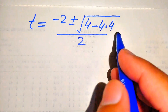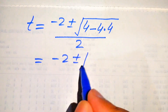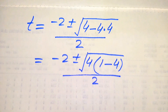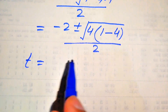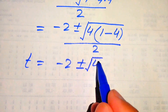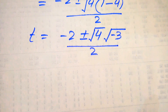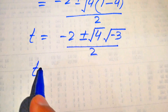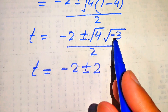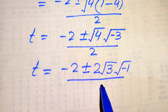Inside the square root we have 4 as a common term. Taking out the factor of 4 gives square root of 4 times (1 minus 4), divided by 2. We break the square root sign across both terms: square root of 4 times square root of (1 minus 4), which is square root of minus 3, divided by 2. We further split square root of minus 3 into square root of 3 times square root of minus 1.